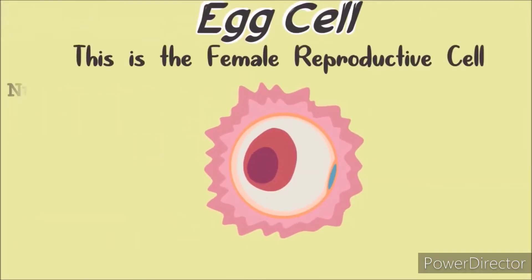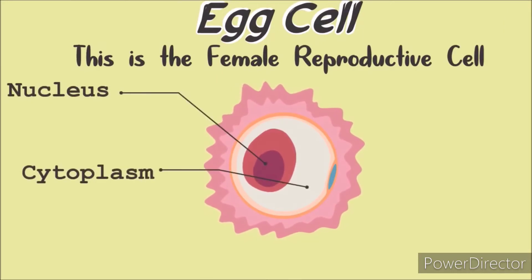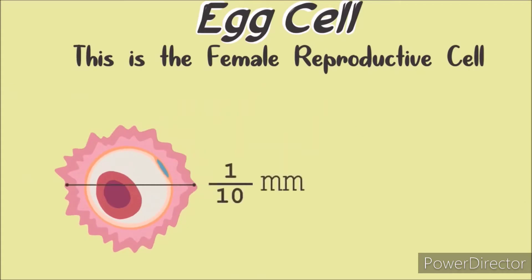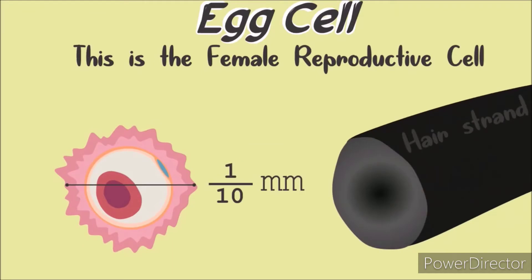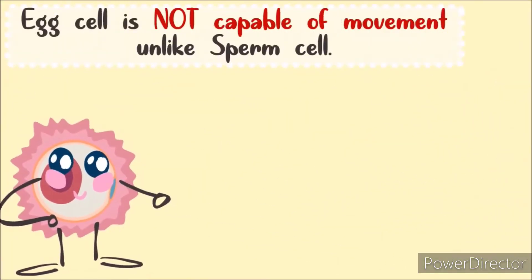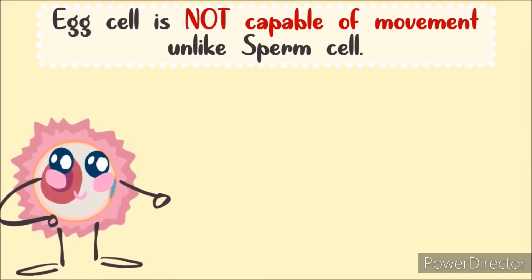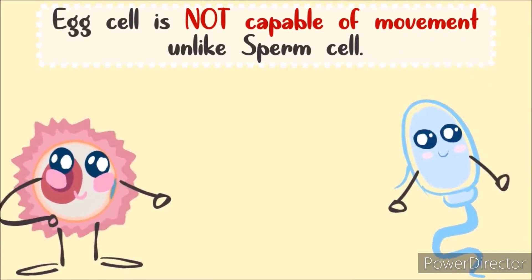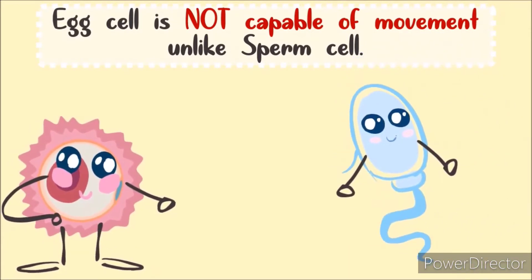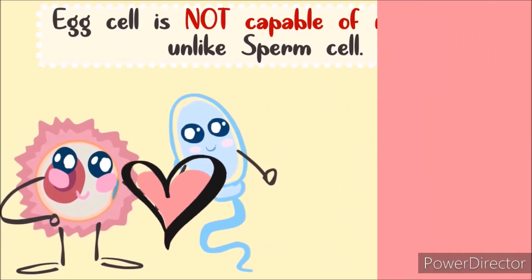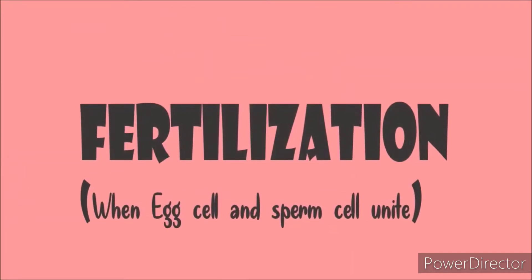This is an egg cell — the female reproductive cell. Did you know that the egg cell is only one-tenth of a millimeter? That's right! It is about the size of the diameter of a hair strand. The egg cell is not capable of movement, unlike the male reproductive cell which is the sperm cell. The sperm cell is able to move. And when the sperm cell and egg cell unite, it is called fertilization.